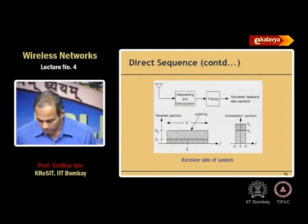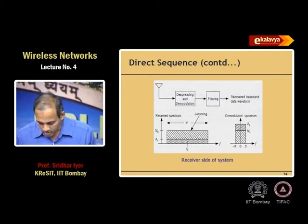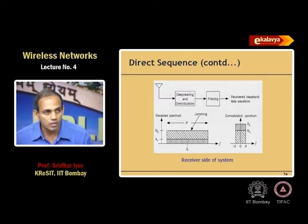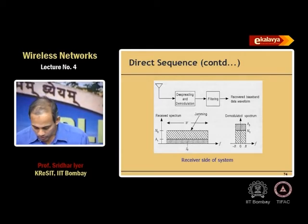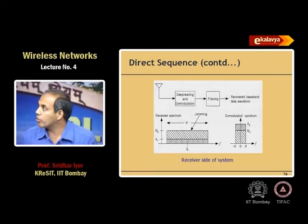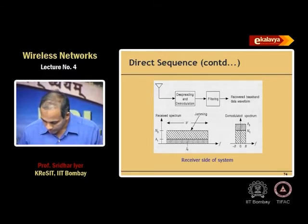At the receiving end, you receive everything — your original data plus some amount of noise, either deliberate or unintentional. That deliberate noise is called jamming. Through de-spreading and de-modulation you are able to recover the de-modulated spectrum. That is the basic idea of such a system.